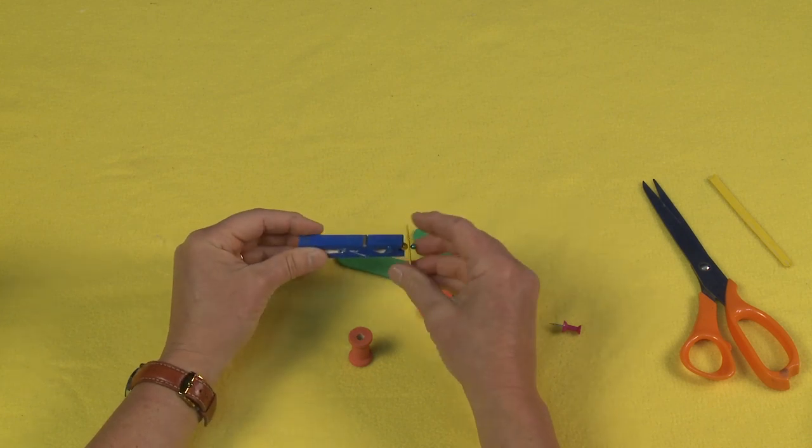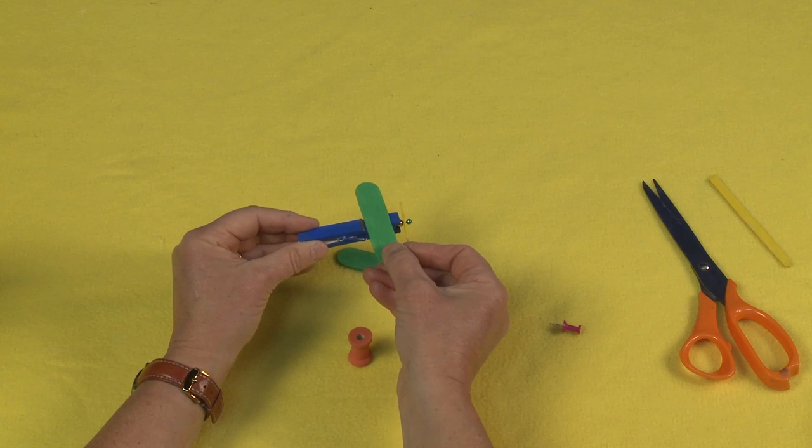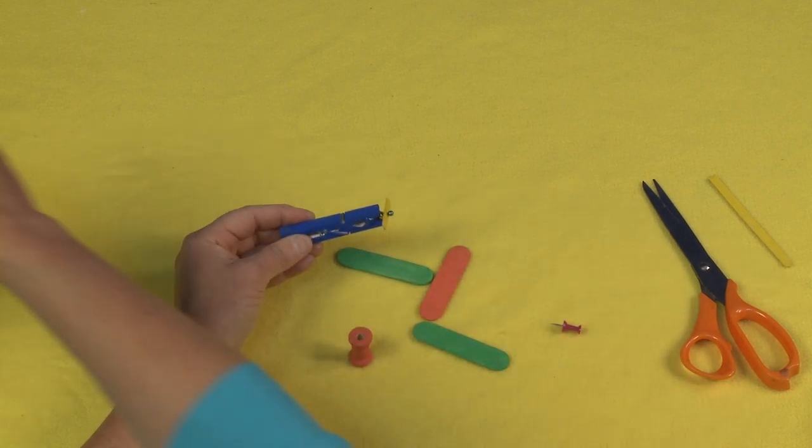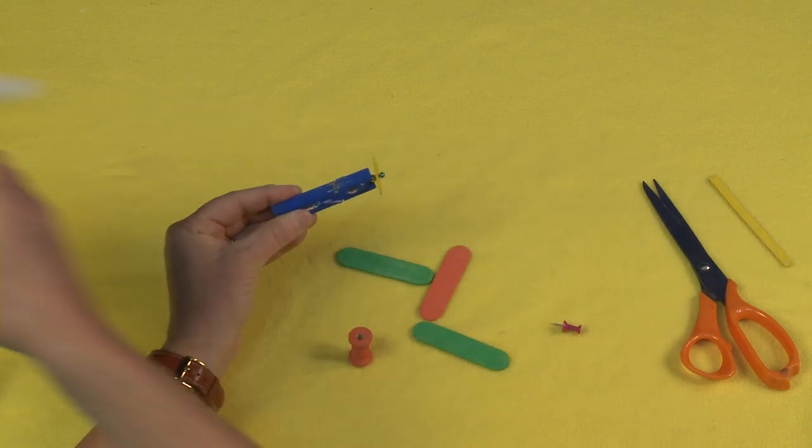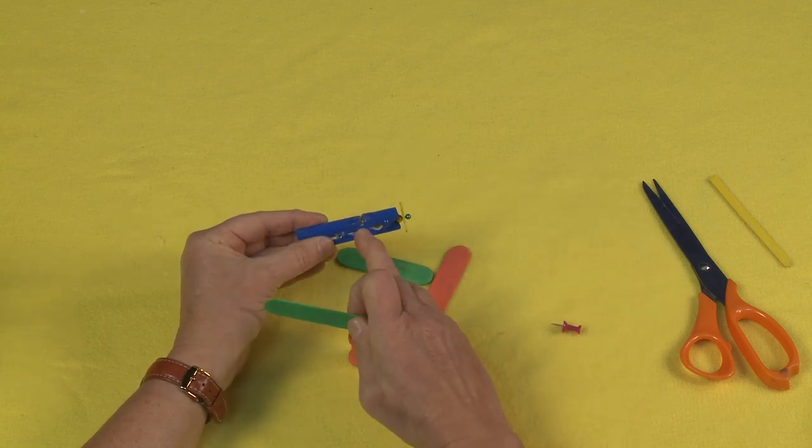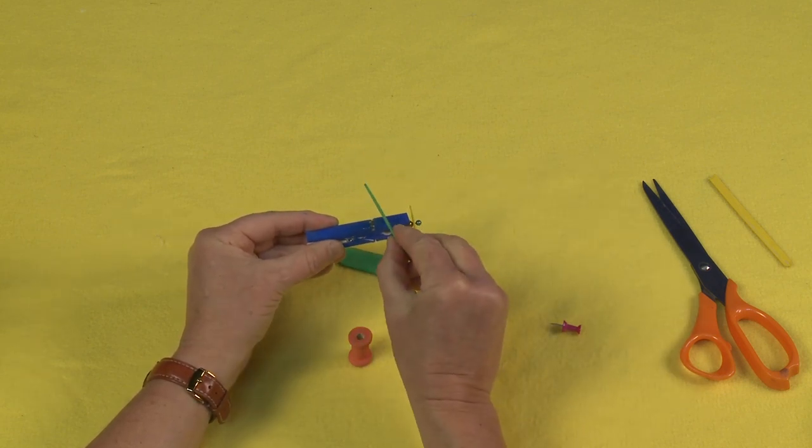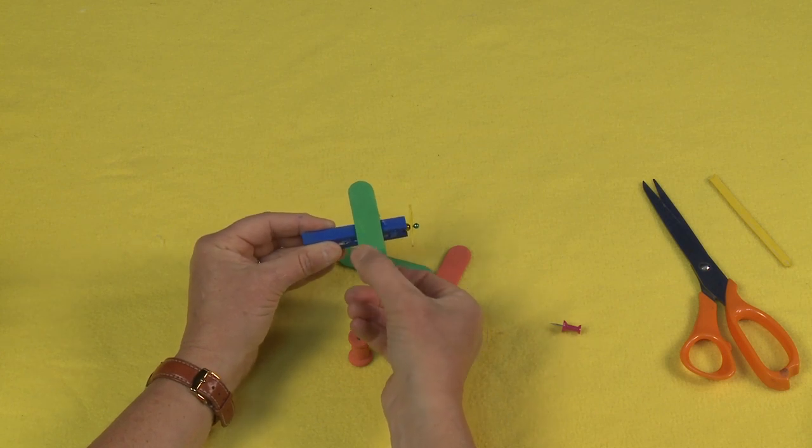So now we're going to add the wings and I'm just going to add those right over top here. I'll put a little bit of glue on either side here and I do want to make sure that I leave enough. See where that little pin goes? I'm just kind of splitting my wing between the two of those pins there.